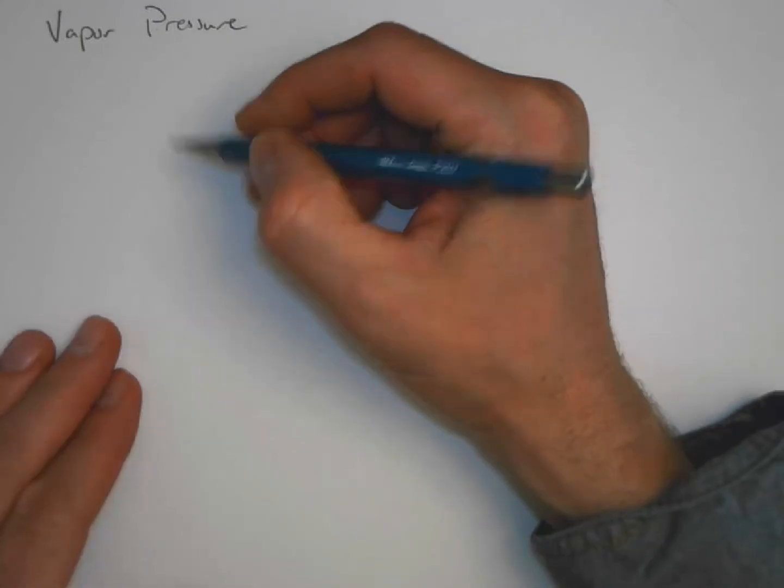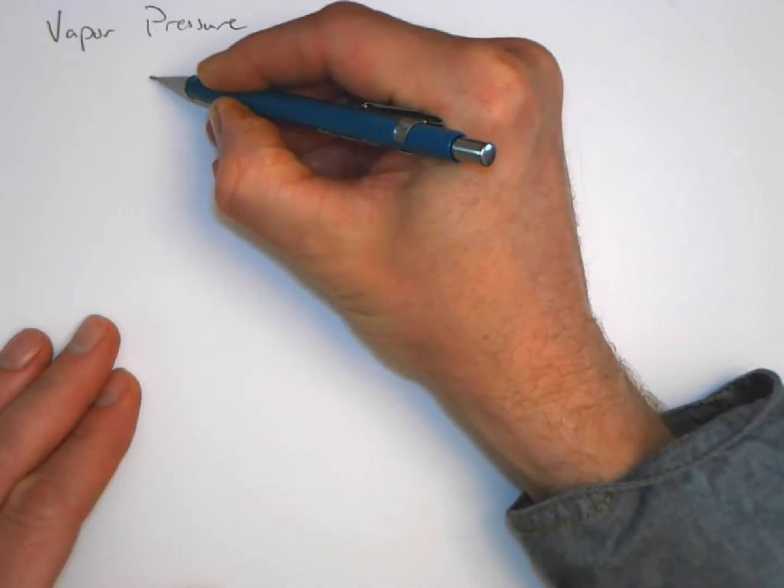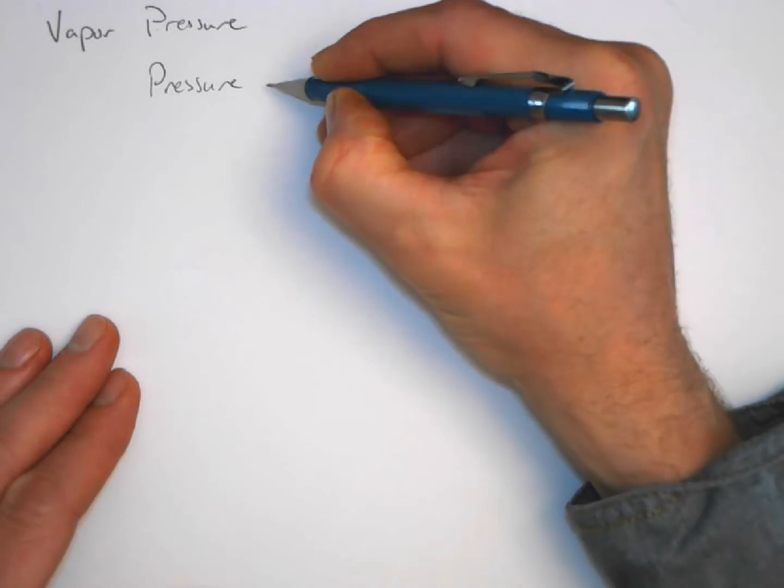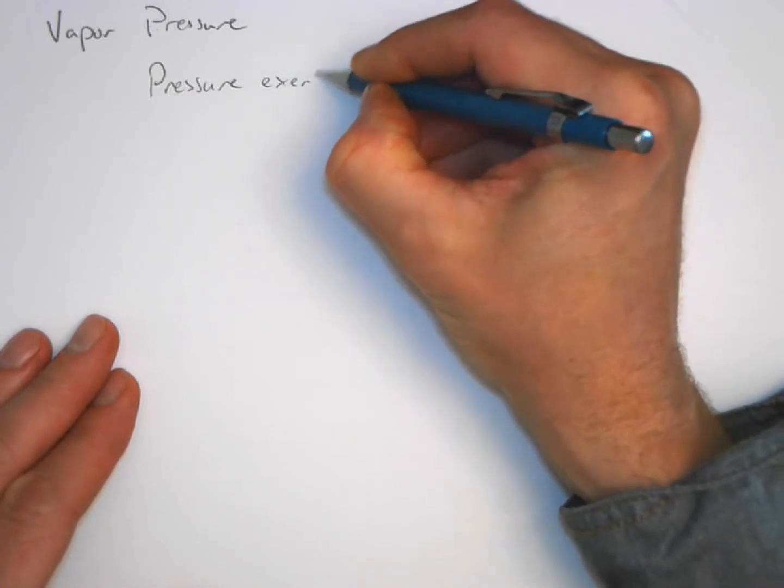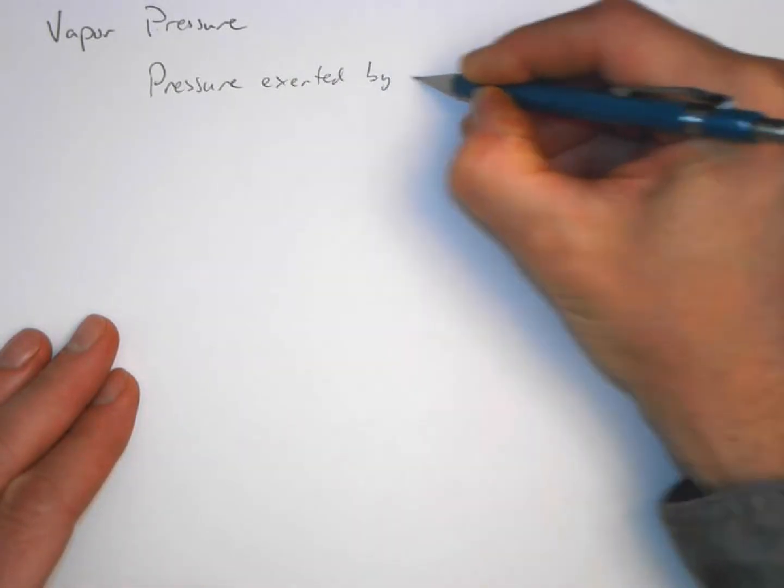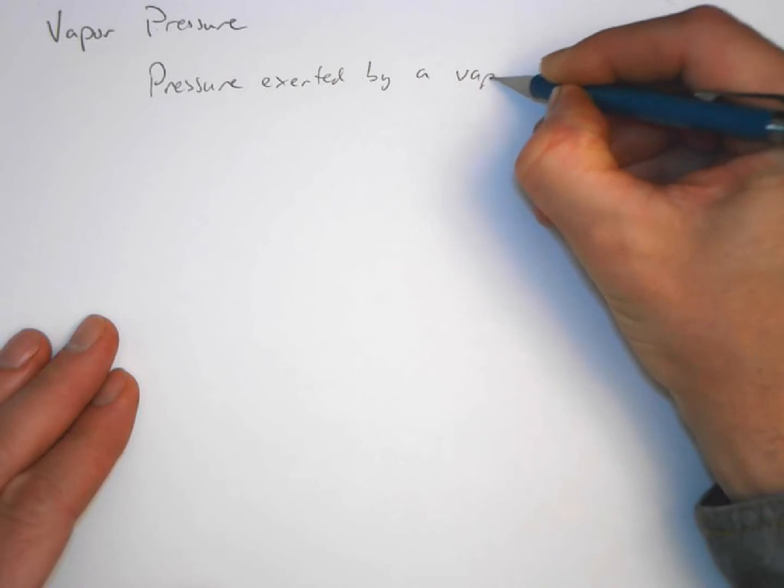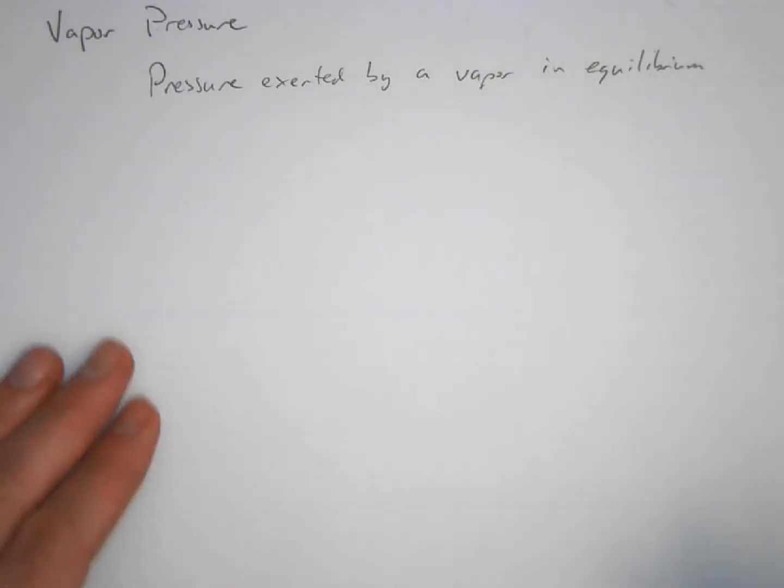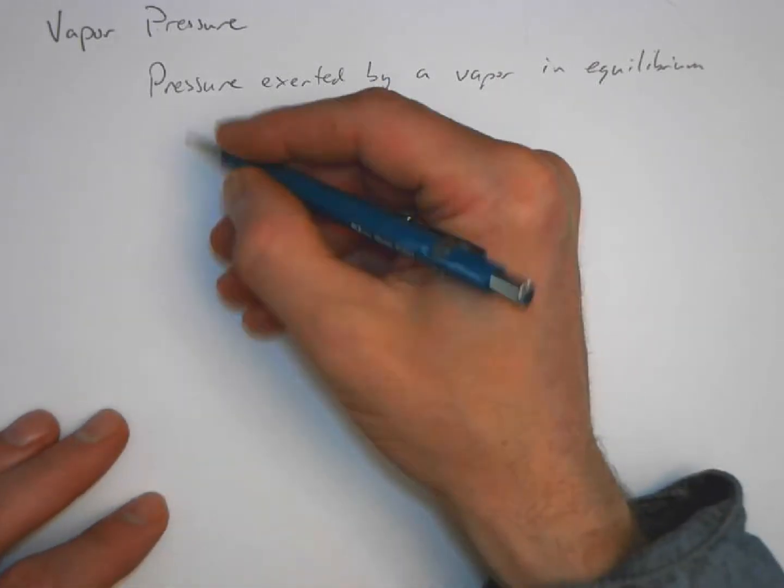Next we're going to look at the idea of vapor pressure and let's first define what vapor pressure is. Vapor pressure is the pressure exerted by a vapor in equilibrium with its pure liquid or solid.